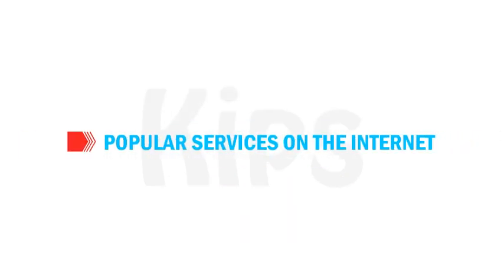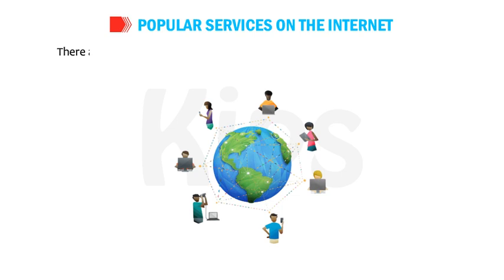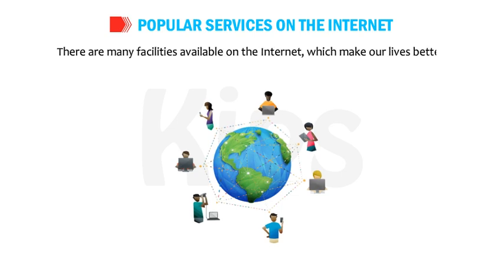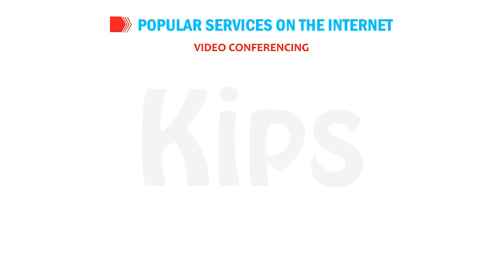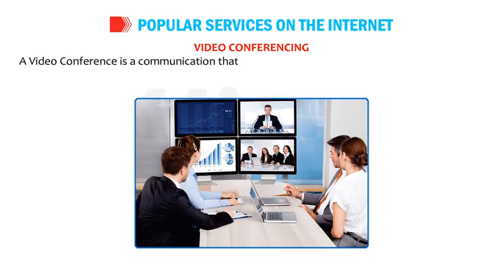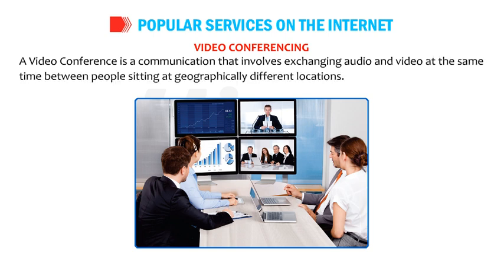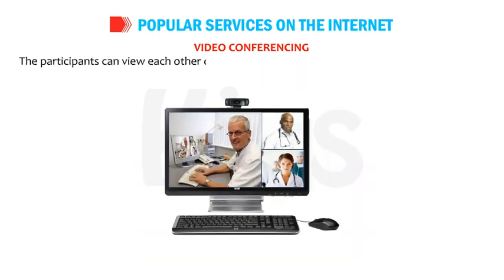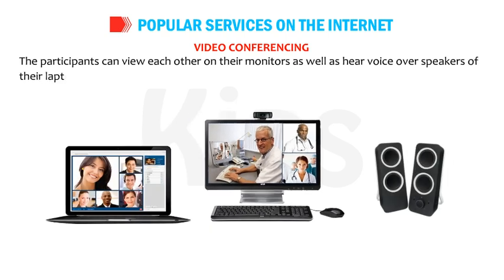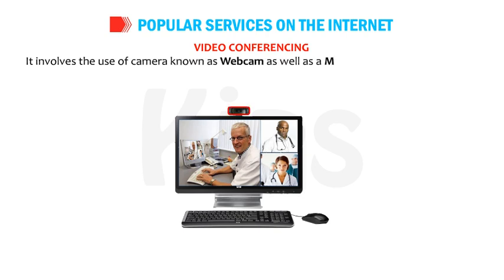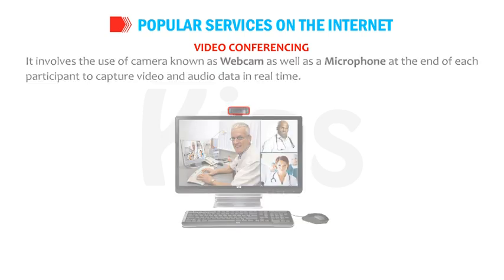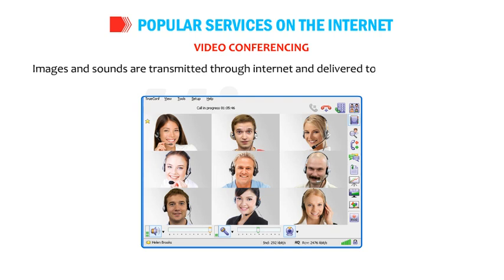Now let us talk about the popular services on the Internet. There are many facilities available on the Internet which make our lives better. Video Conferencing is a communication that involves exchanging audio and video at the same time between people sitting at geographically different locations. The participants can view each other on their monitors and hear voices through speakers of their laptops or desktop computers. It involves the use of a webcam and a microphone at each participant's end to capture video and audio data in real time.